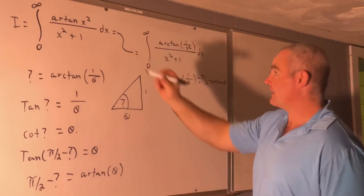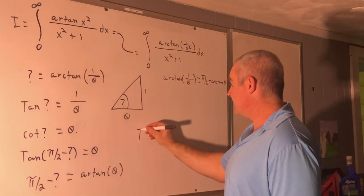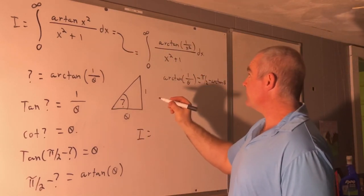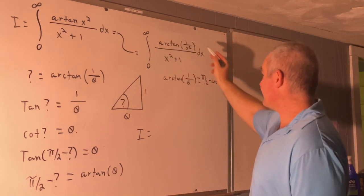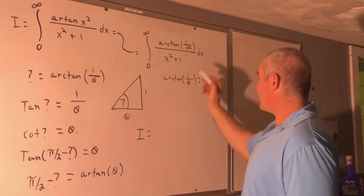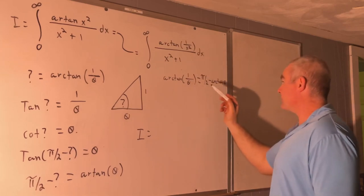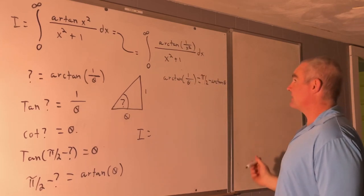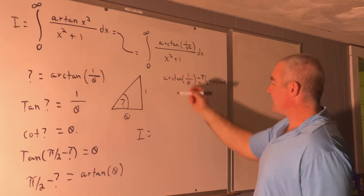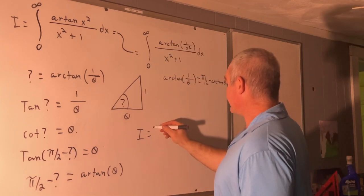So now we know that I is equal to this thing, right? It's equal to this thing. Well, this part up here is equal to pi over 2 minus arc tangent theta. So we'll use that and split it up into two separate integrals.